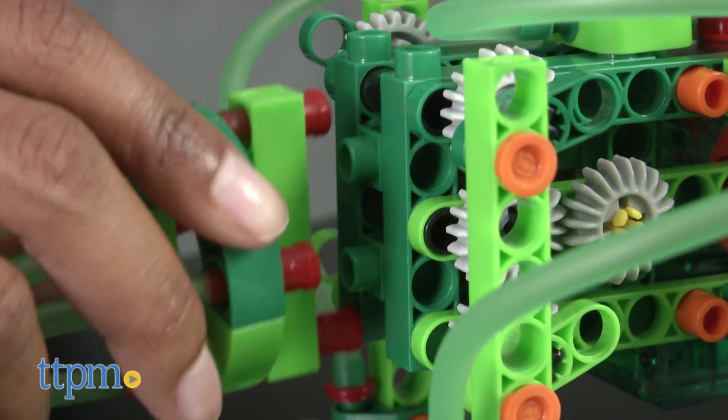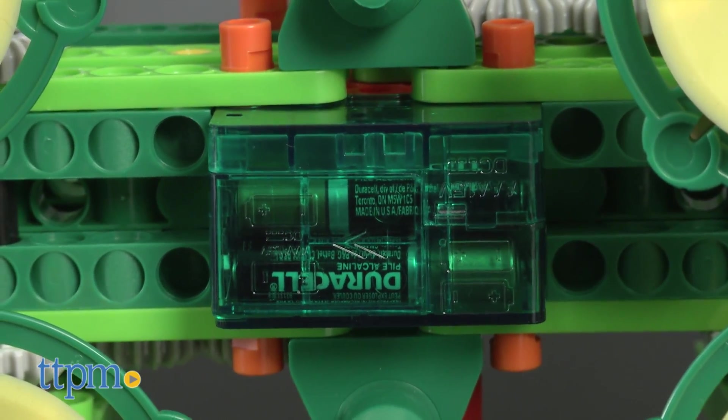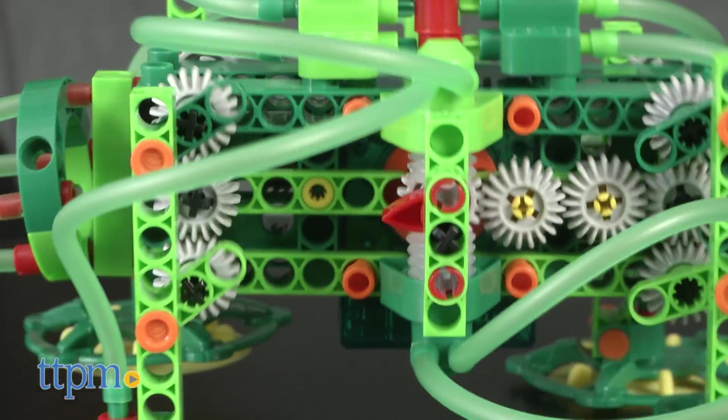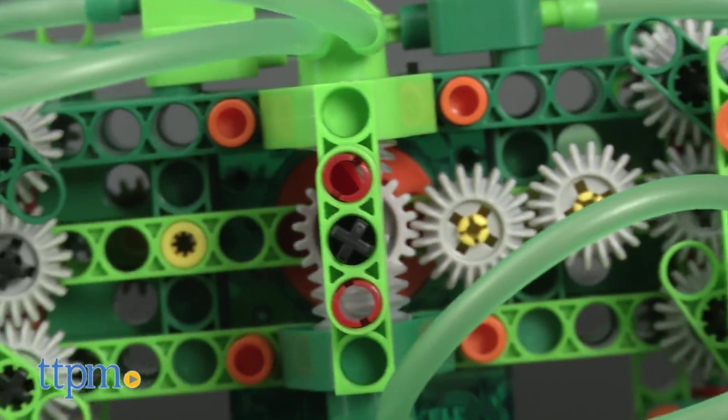Once you build your geckobot, which took us about 45 minutes, flip on the motor switch and watch it crawl vertically up and down perfectly smooth surfaces like glass, plastic, whiteboards and glossy laminates.